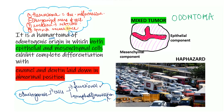What is a hamartoma? A hamartoma is a developmental malformation where there is an abnormal proliferation or a disorganized mass of cells in a location indigenous to them — so this is a native location to these cells. An odontoma is considered a hamartoma because of its limited growth potential as well as the lack of recurrence.